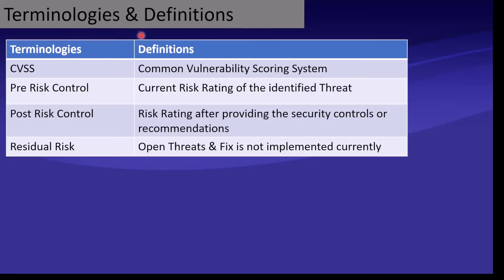Terminologies and definitions. CVSS — Common Vulnerability Scoring System. Pre-risk control: the current risk rating of the identified threats. Post-risk control: the risk rating after providing security controls or recommendations. Residual risk: open threats where a fix is not currently implemented — these known risks we call residual risk.